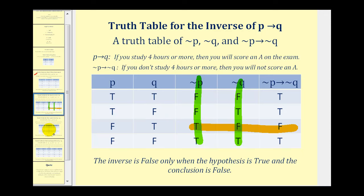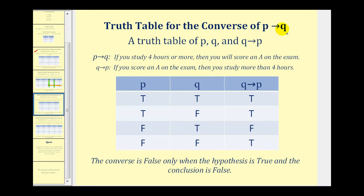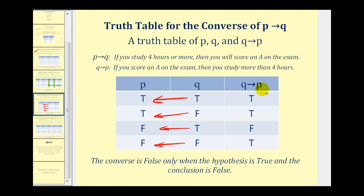Let's take a look at the converse of if P then Q, which means we look at if Q then P. We'll list P and Q again as before. We just have to be careful because we're analyzing the hypothesis and conclusion in the opposite order. You may find it helpful to switch the order of the columns to match the if-then statement. Using the fact that if Q then P is only false when Q is true and P is false, we can complete this column quickly. Notice that Q is true and P is false in one row, which gives us the false in the third column. Everything else is true.